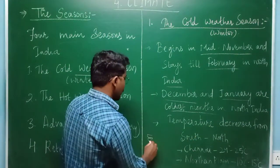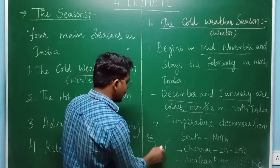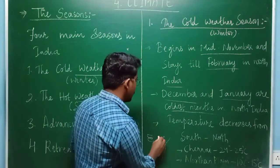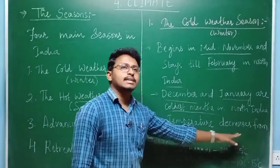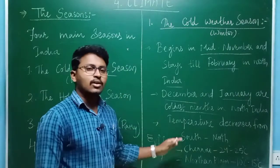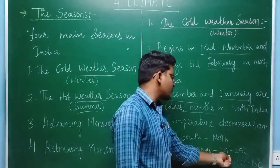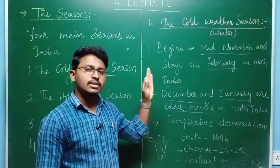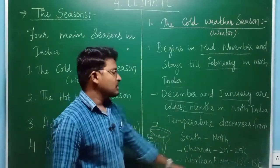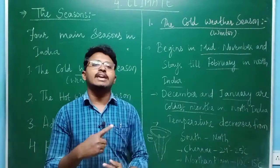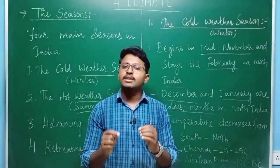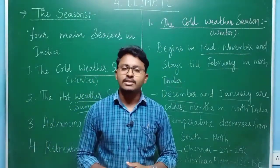The temperature in India decreases from South to North. If we take the India map, regions in the south experience somewhat normal temperatures, but as we move towards North India, the temperature starts decreasing. For example, Chennai, lying in the southeastern part of India, experiences 24 to 25 degrees average temperature during winter. But in the northern plain region, the temperature is 10 to 15 degrees.